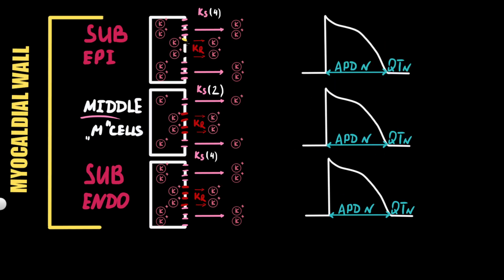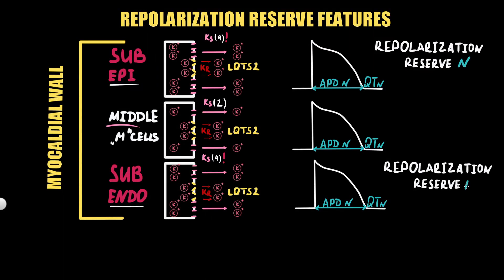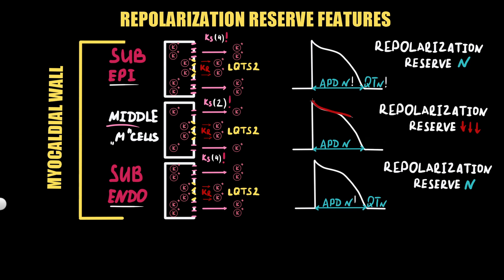In LQT syndrome type 2, when rapid potassium current is decreased by channel mutation, both subepicardial and subendocardial regions can compensate by more powerful activation of a larger number of slow potassium channels. As a result, repolarization reserve in these regions prevents action potential duration prolongation and QT prolongation. But in the mid-myocardial region, where the number of slow potassium channels is lower, the repolarization reserve is lower, so the ability to compensate is reduced, and repolarization duration and QT interval will be much longer.